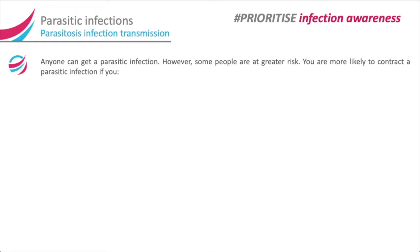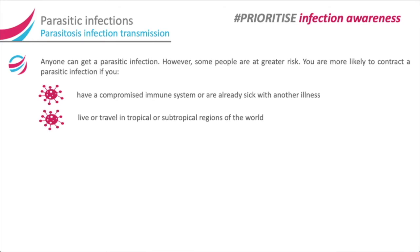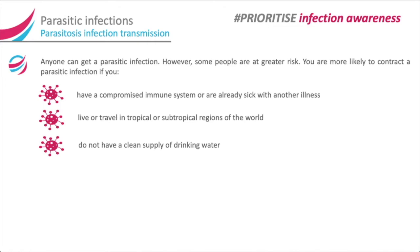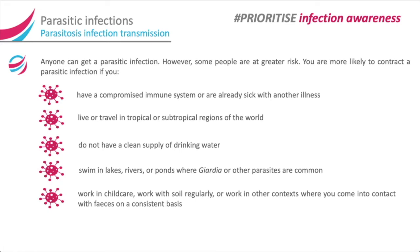Anyone can get a parasitic infection. However, some people are at greater risk. You are more likely to contract a parasitic infection if you have a compromised immune system or are already sick with another illness, live or travel in tropical or subtropical regions of the world, do not have a clean supply of drinking water, swim in lakes, rivers or ponds where Giardia or other parasites are common, or work in childcare, work with soil regularly, or work in other contexts where you come into contact with feces on a consistent basis.